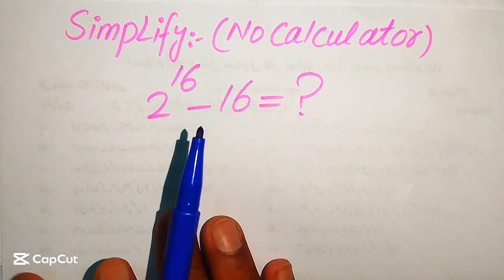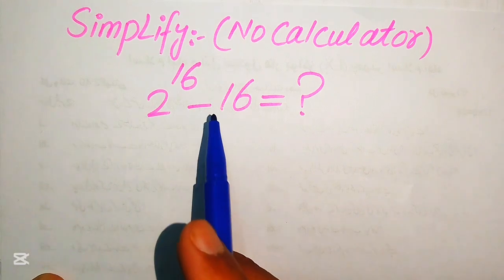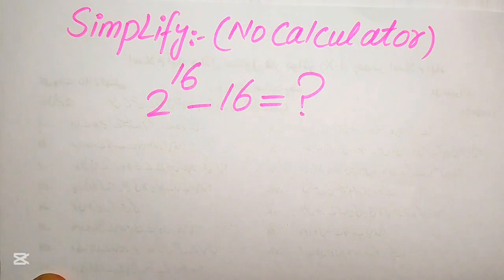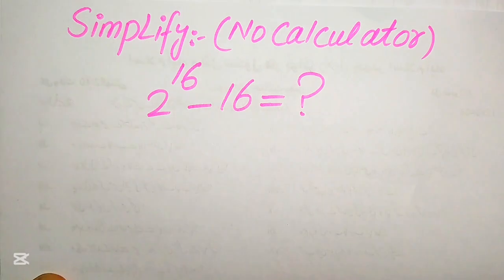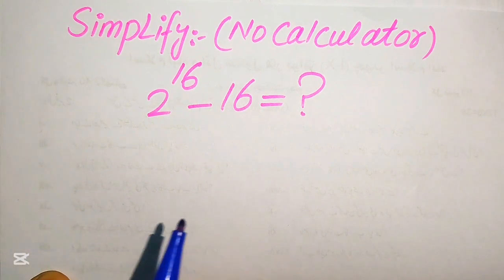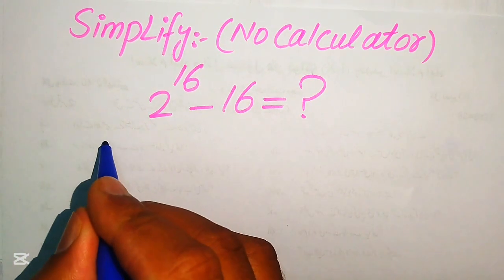Hello everyone. How to simplify this nice algebraic expression: 2 to the power of 16 minus 16. We write this algebraic expression into its lowest form. A calculator is not allowed in this problem, so we will show all of the working. In this video I can give you some nice tricks so you can do all of these calculations in your mind — you don't need a calculator.